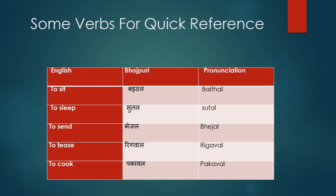Now look at this table of simple verbs. To sit is 'baithal,' to sleep is 'sutal,' to send is 'bhejal,' to tease is 'rigawal,' and to cook is 'pakawal.' Use the sentence patterns I've given and start forming different sentences with these verbs — baithal, sutal, bhejal, rigawal, pakawal — and you will be mastering those tenses and sentences.